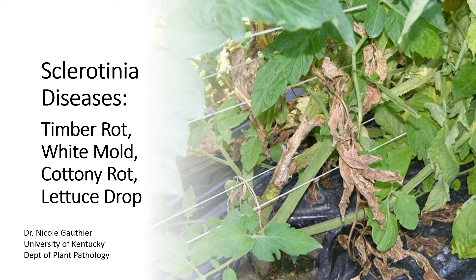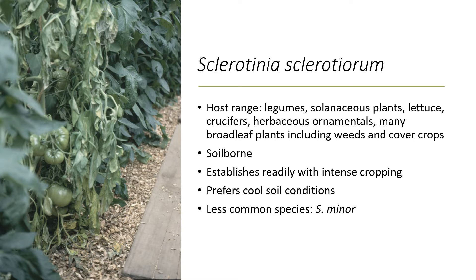Sclerotinia diseases of common vegetable crops, such as timber rot and lettuce drop, are caused by the soil-borne fungus Sclerotinia sclerotiorum. This fungus has a very wide host range including legumes, solanaceous plants, and many others.